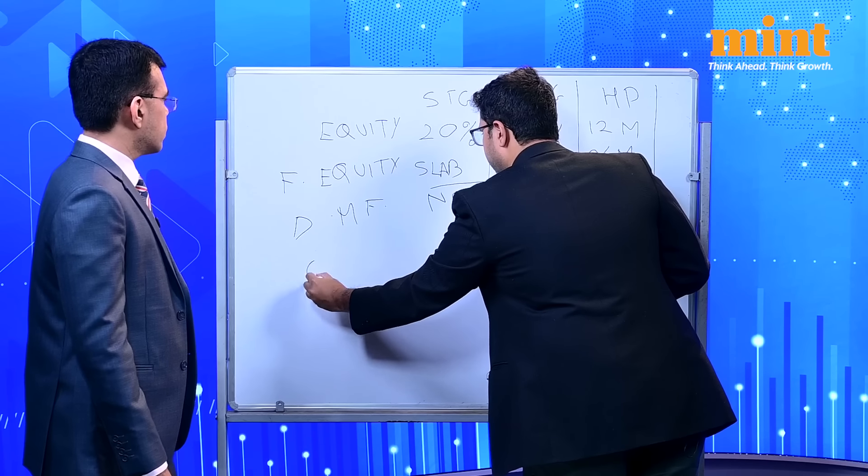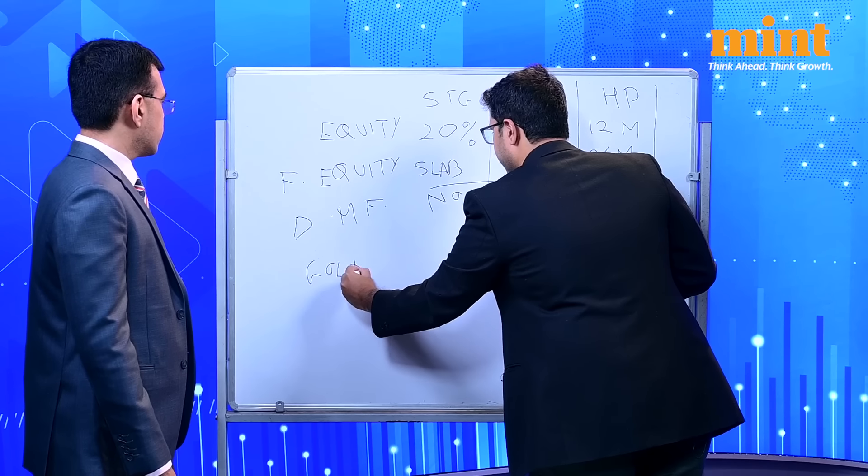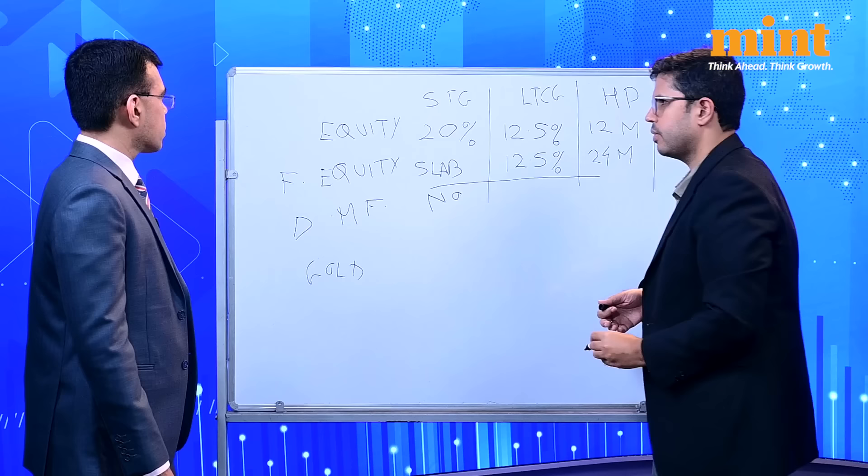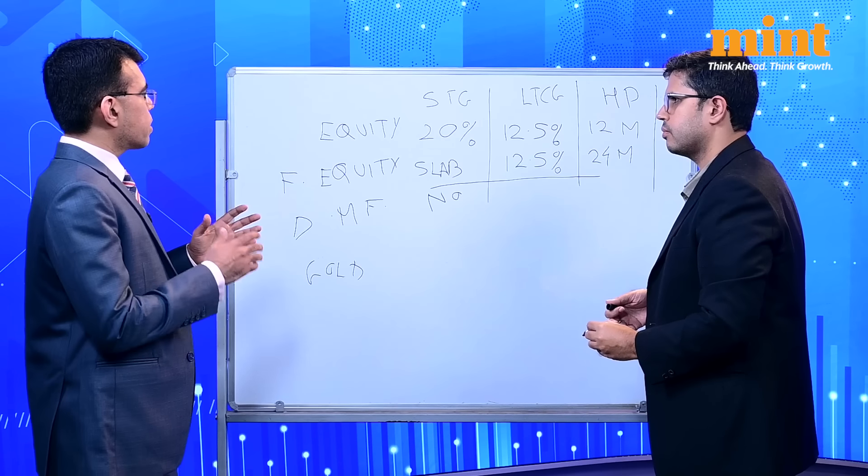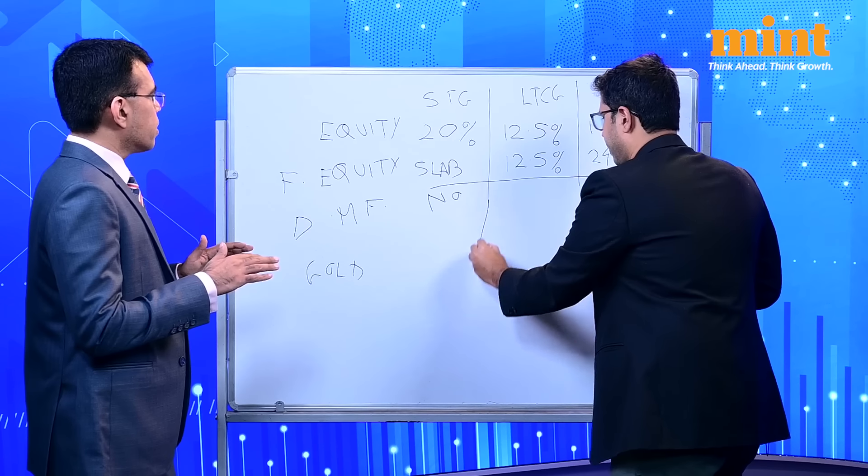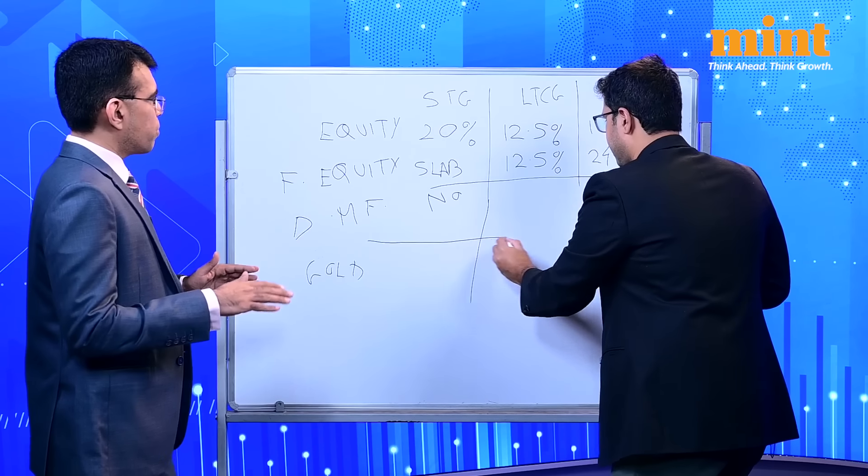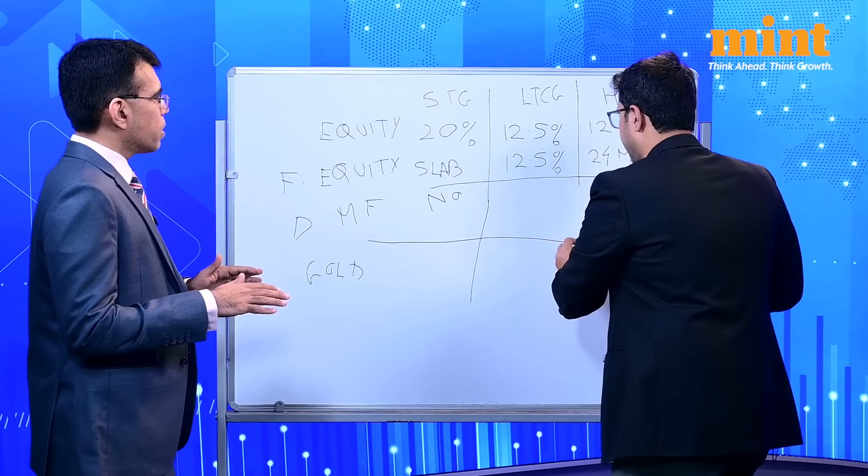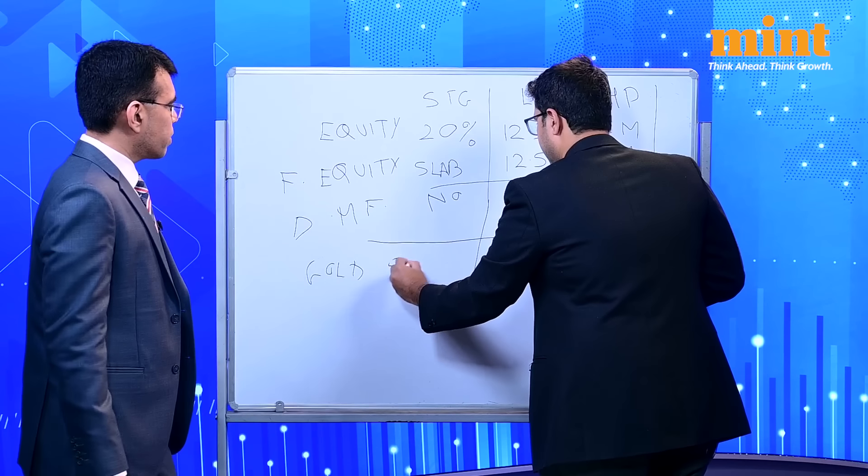Then let us talk about gold and then we will turn to real estate. So gold, what has been the change? So government basically says that now we are standardizing everything. So more than 2 years, 12.5%. Less than 2 years, slab rates. It is not different for different asset classes. Government is standardizing everything.